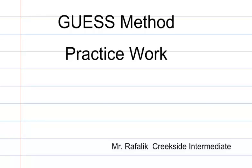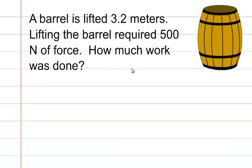Let's try practicing the GUESS method on a problem that involves work. A barrel is lifted 3.2 meters. Lifting the barrel required 500 newtons of force. How much work was done? Pause the recording and try working the problem on your own, then unpause it and see how you did.